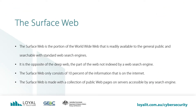Thanks to Wikipedia for all of these definitions. The surface web is the portion of the worldwide web that is readily available to the general public and searchable with standard web search engines. It is the opposite of the deep web, the parts of the web not indexed by a web search engine. The surface web consists of 10% of the information that's on the internet and is made with a collection of public web pages on servers accessible by any search engine.